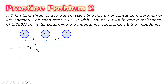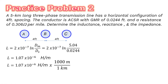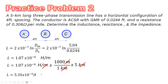Now we solve for the inductance: L = 2 × 10⁻⁷ × ln(D_M / D_S) = 2 × 10⁻⁷ × ln(5.04 / 0.0244) = 1.07 × 10⁻⁶ H/m. Converting to Henry by multiplying by 1,000 m/km × 5 km gives an inductance of 5.35 × 10⁻³ Henry.